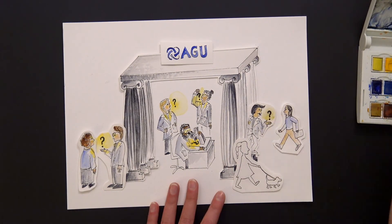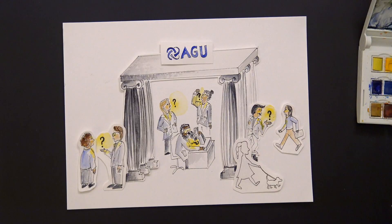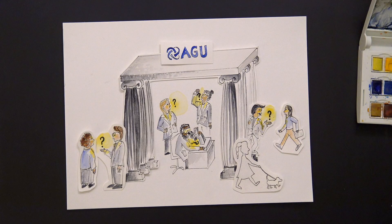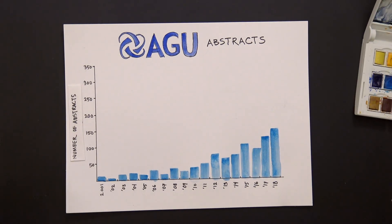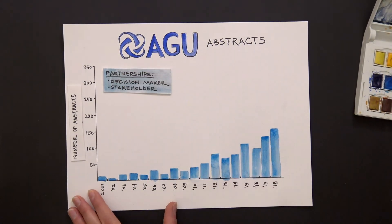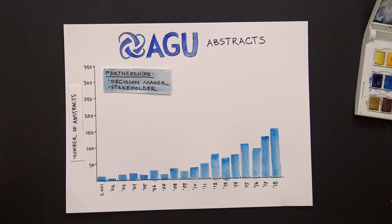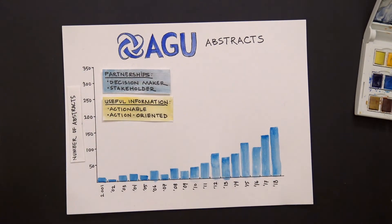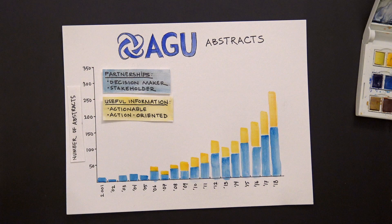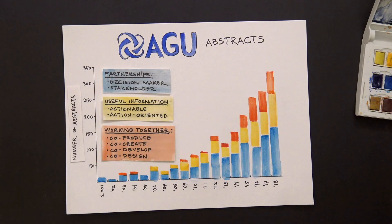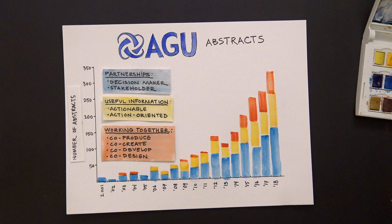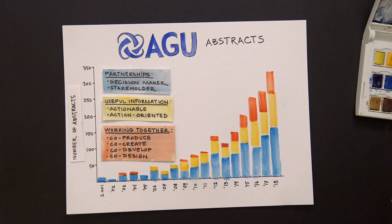If you search AGU abstracts throughout the years, you can see a marked increase in scientists connecting geoscience with society. Here are the amount of abstracts that use the terms decision-maker and stakeholder, which signifies an increase in partnerships. Here's how many more included actionable and action-oriented, which signifies a focus on generating useful information. And here's how many more used the terms co-produce, co-create, co-develop, and co-design, which signifies the importance of working together.